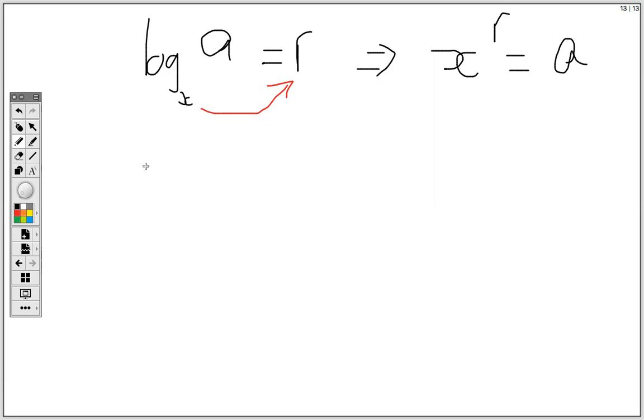So for example, if I have log base 3 of r equal 2, then rewriting it in exponential form, I will have 3 to the power 2 equal r. Because remember, this is the base, the 2 becomes a power and it's equal to r.